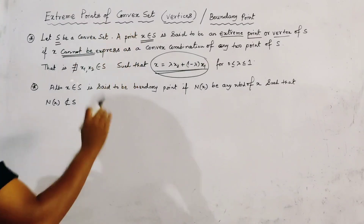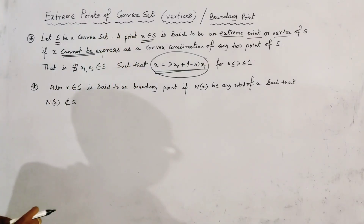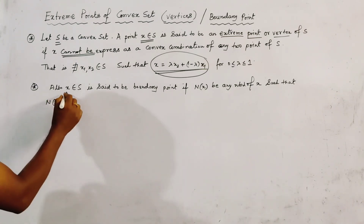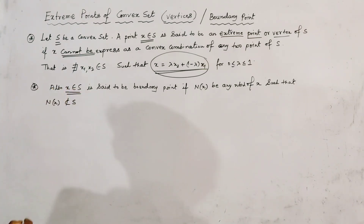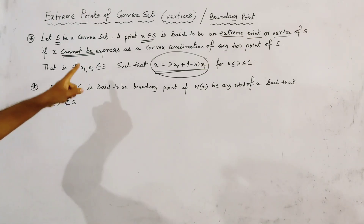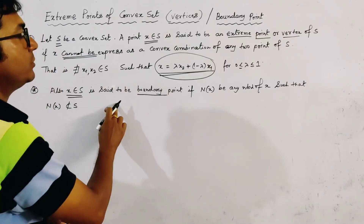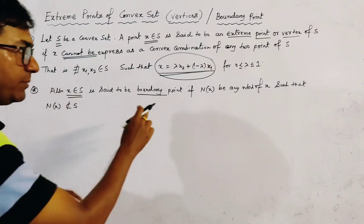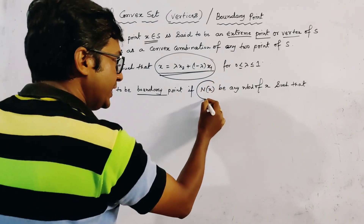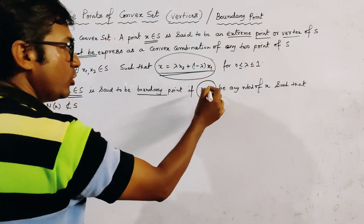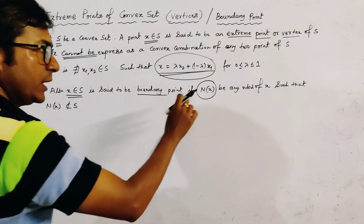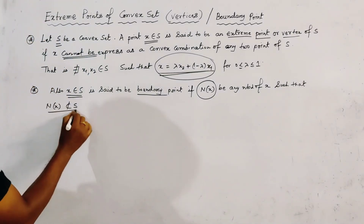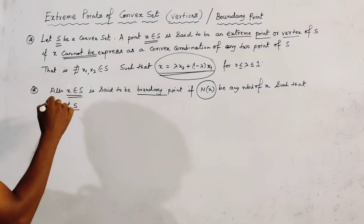So this point is said to be an extreme point or vertex. Also, a point X belonging to a convex set S is said to be a boundary point of the convex set S if, for any neighborhood N of X, N of X is not contained entirely within S.